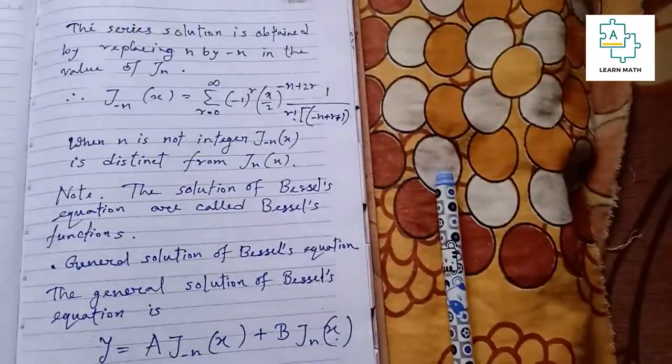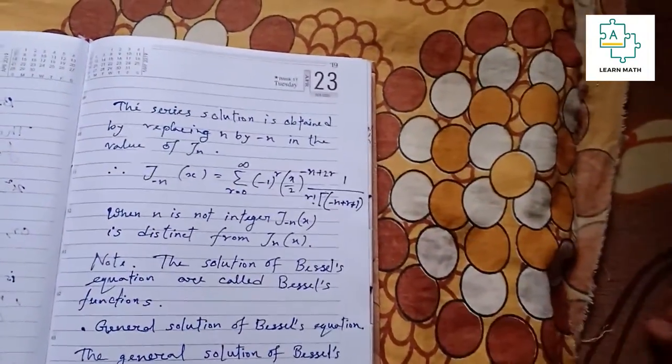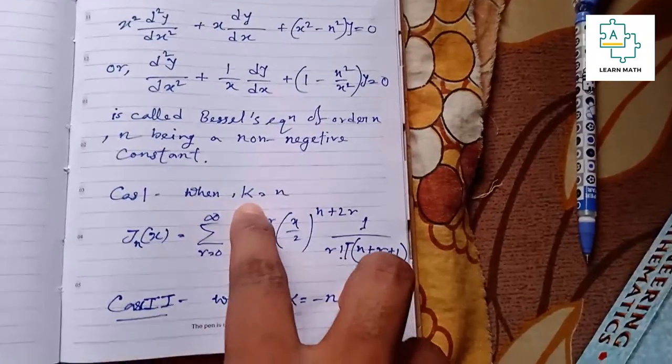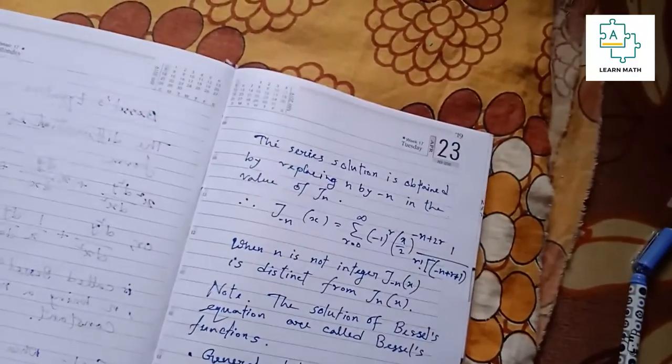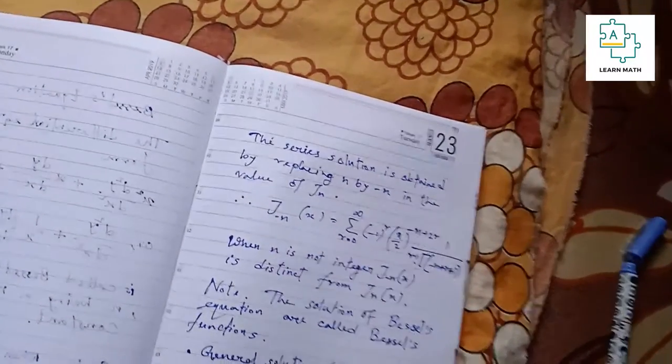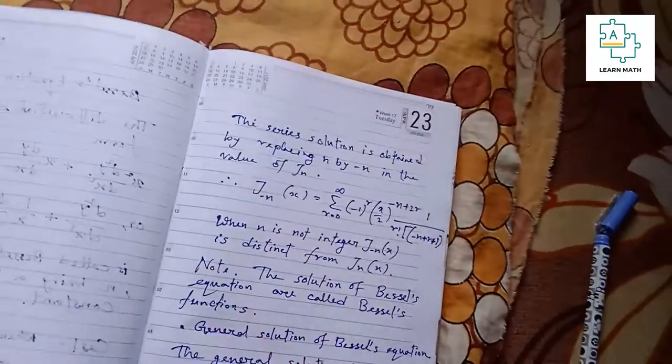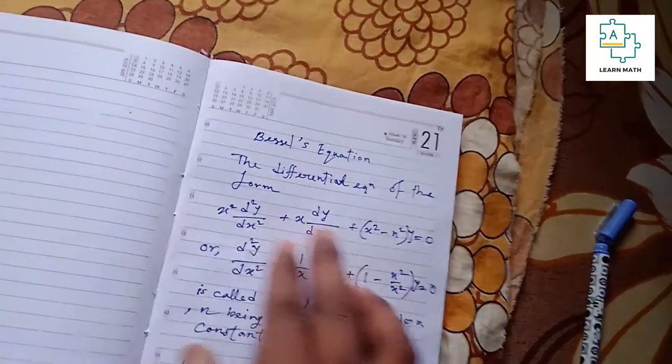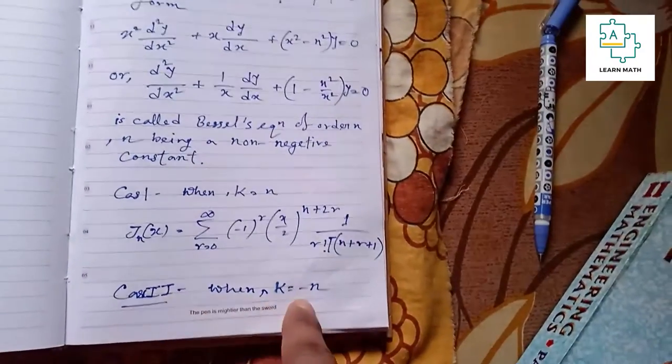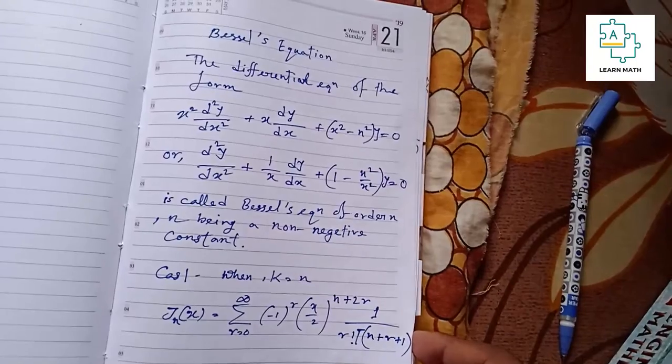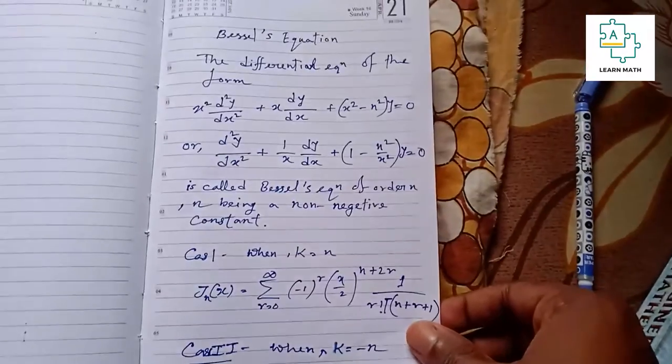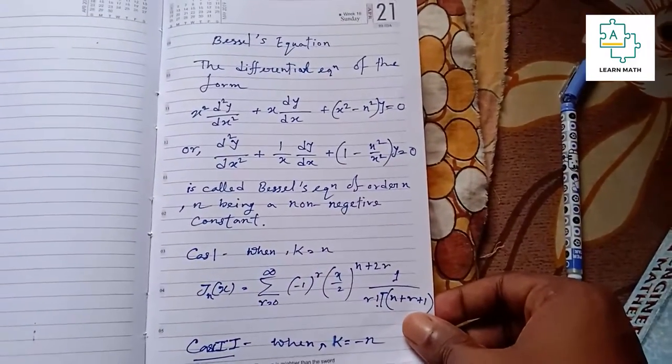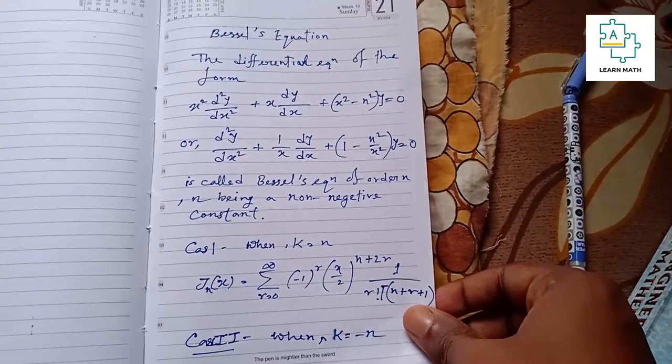This is the solution of Bessel's equations for two cases: case 1 when k equals n and case 2 when k equals minus n. Check it, practice it, it will be very important in your engineering mathematics. Thank you.